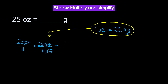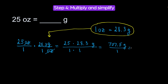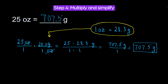Now, let's do the math. 25 times 28.3 grams over 1 times 1. We are multiplying fractions here. 25 times 28.3, we will have 707.5 grams over 1, or just 707.5 grams. And this is our answer. So, 25 ounces is equal to 707.5 grams.